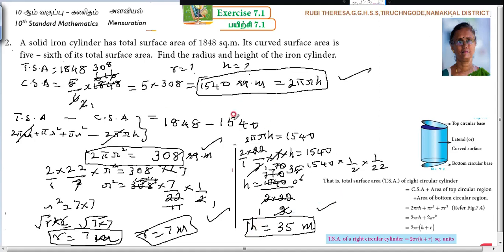Suppose if they are asking in 2 marks, half mark for each step. If they're asking in 5 marks, 4 marks for the steps, then remaining for the formula, substitution, everything, 1 mark. Please visualize this diagram in the exam hall.